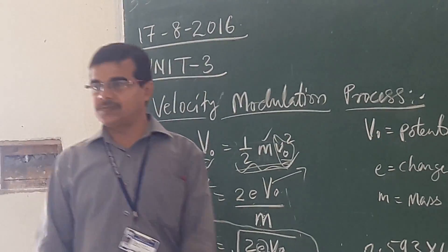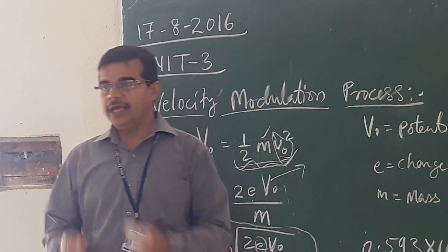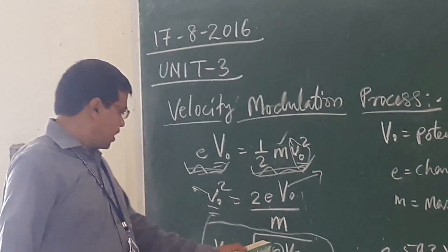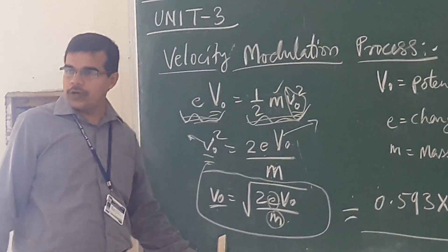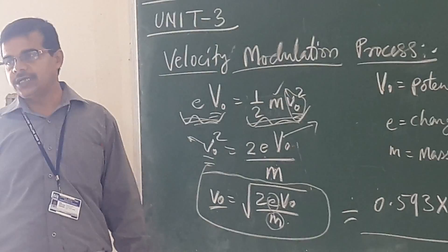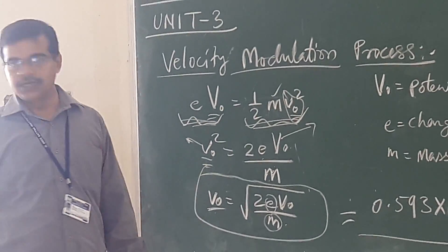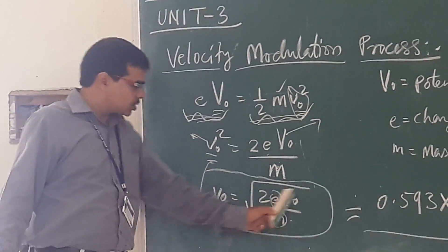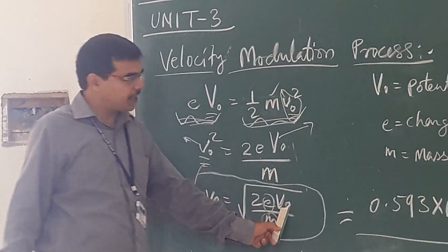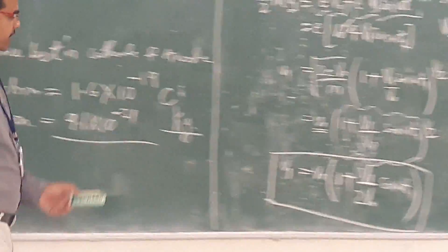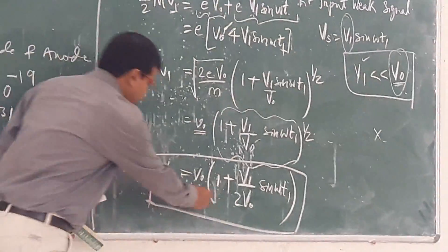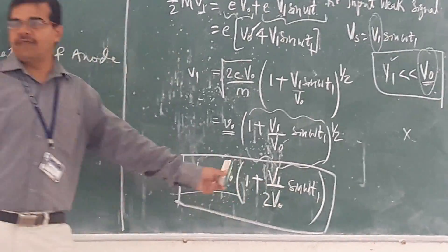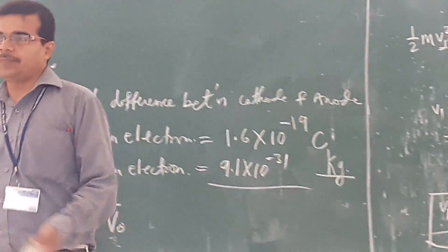In between the buncher and catcher cavity, you have the drift space. In the drift space, you have the velocity. Before reaching the buncher cavity, the velocity depends only on DC voltage. When it is between the buncher and the catcher cavity, the velocity depends upon these different parameters.